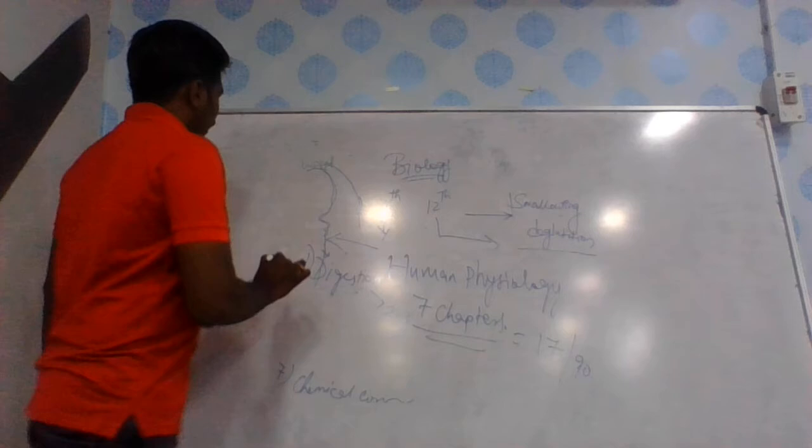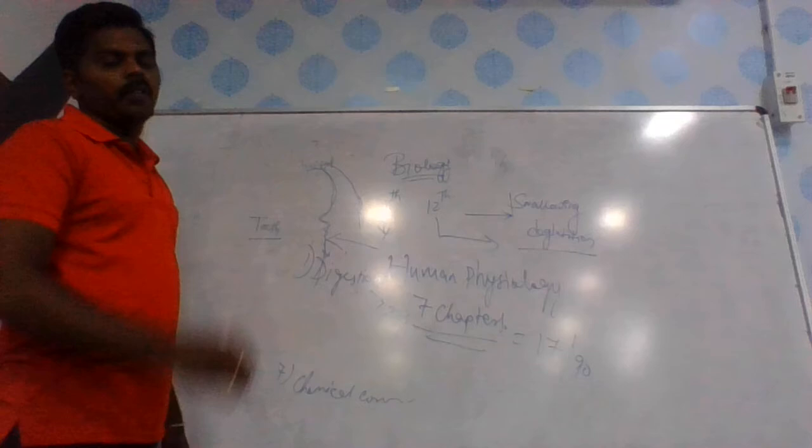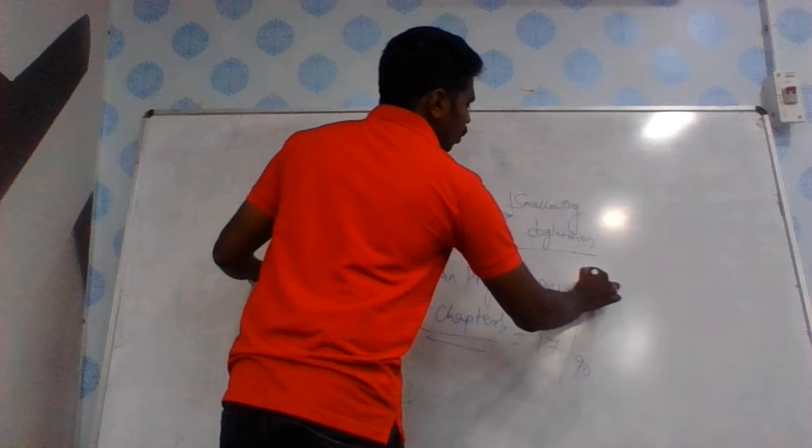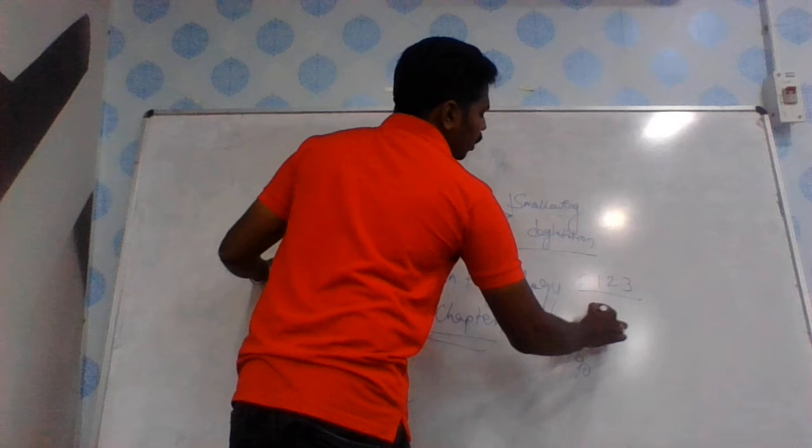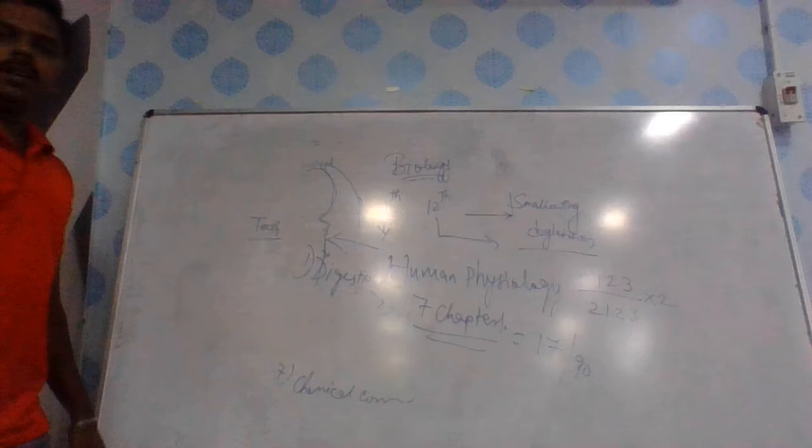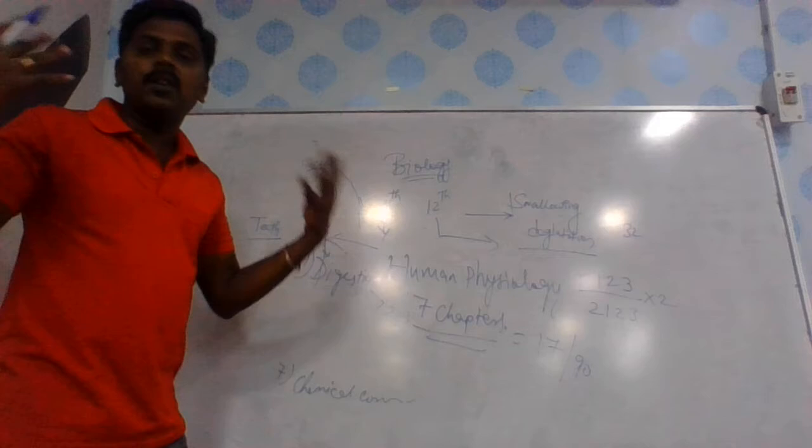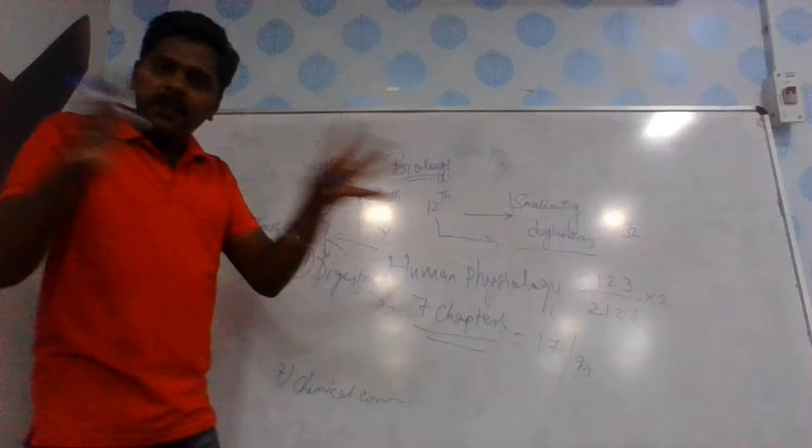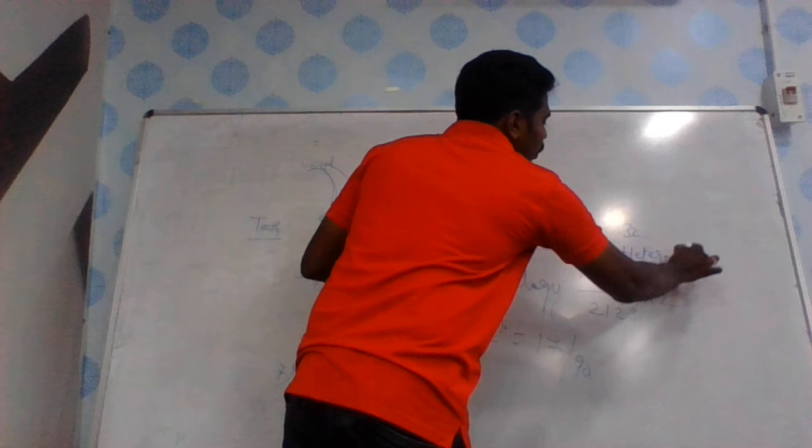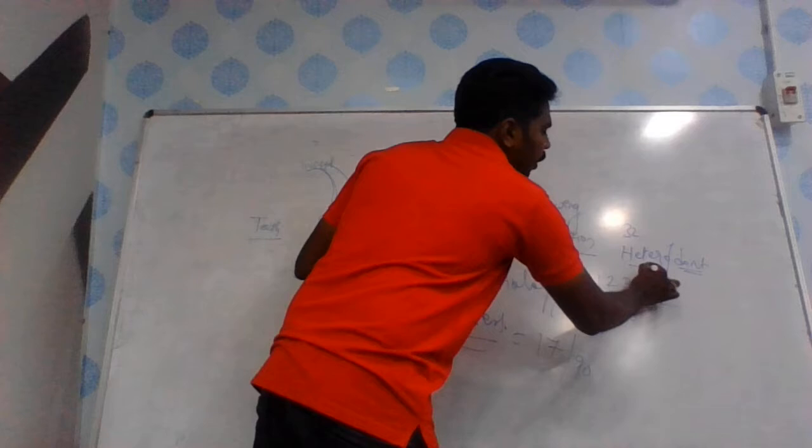One - see, teeth. Human dentition formula. The human dentition formula is 2123/2123 into 2. Total number of teeth is 32, and the 32 split - we have different types of teeth.